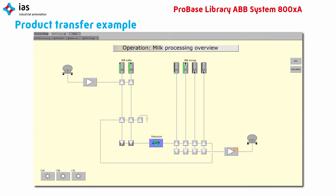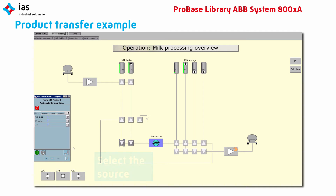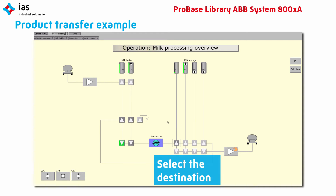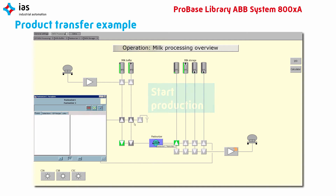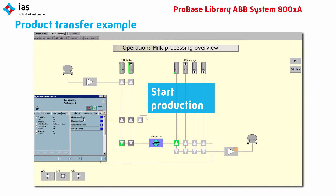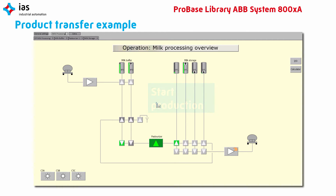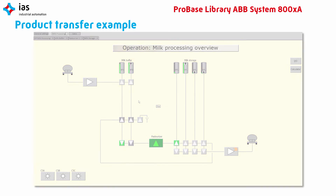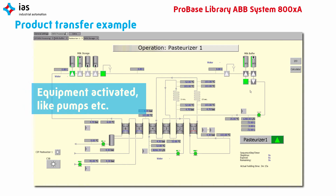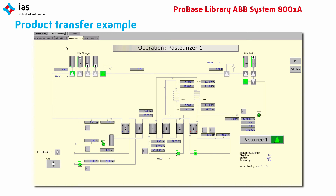Now we will give you an example of a product transfer with ProBase. First of all, you select the product source. After that, you select the product destination. When this is done and all starting conditions are right, you are ready to start the production. After this, the pasteurizer starts with the production. As you can see in this detailed screen of the pasteurizer, the required equipment, like pumps, is activated.